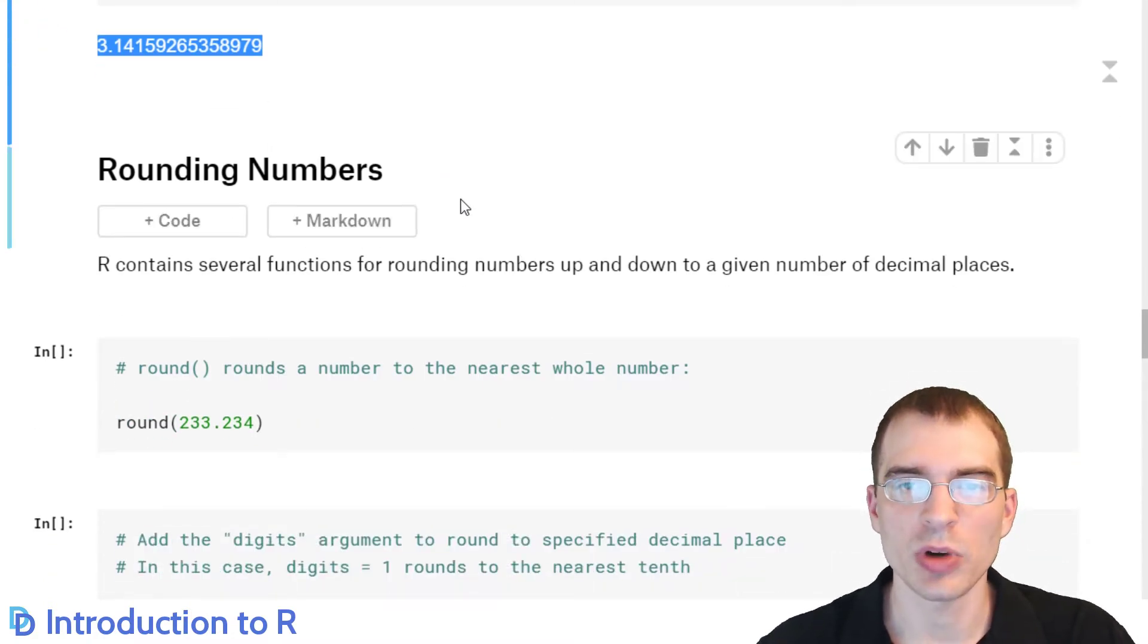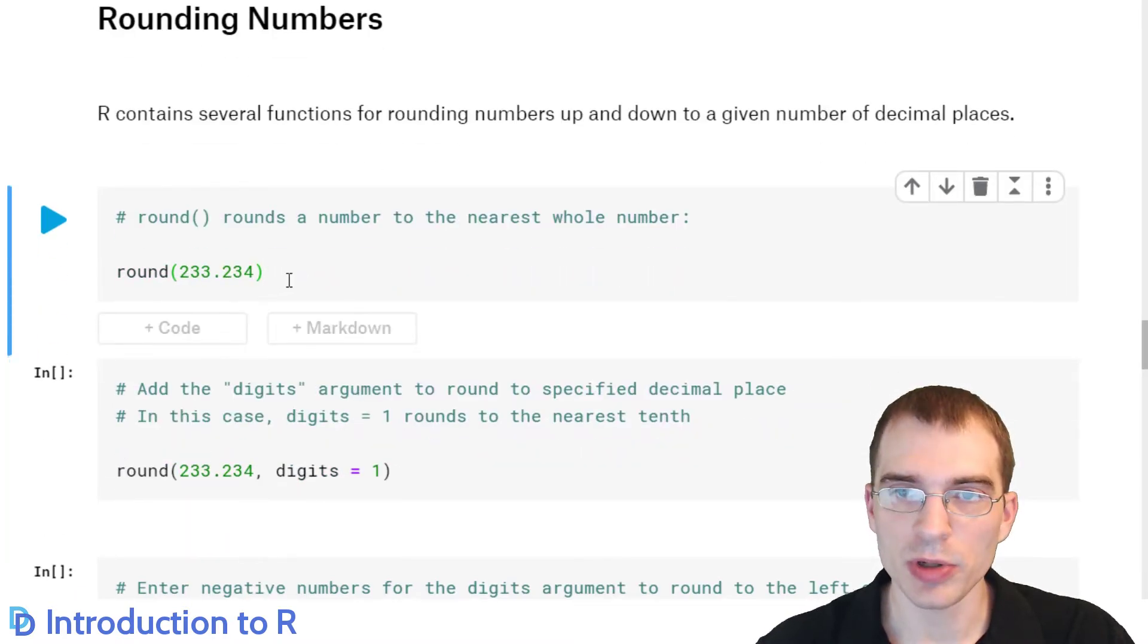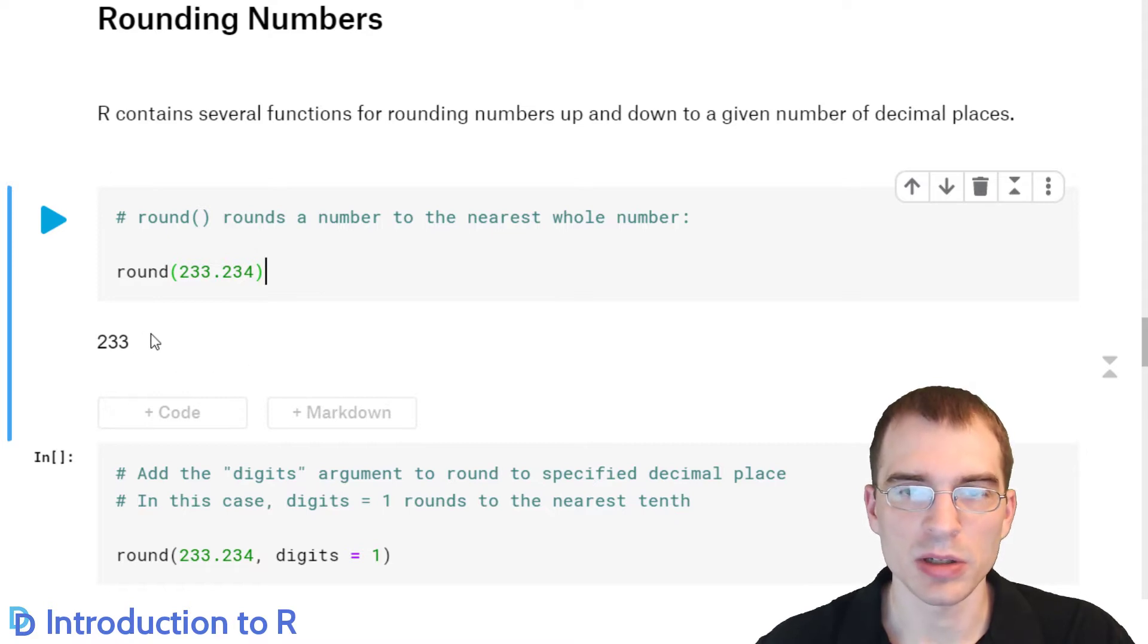There are several functions in R as well for rounding numbers, and this is actually something you'll probably be doing a fair amount in data science, especially if you're working with fairly large data sets. Sometimes a large data set that has a lot of precision in the floating point number, it might be unnecessary to have that amount of precision, and cutting it off to a certain decimal place can actually save a decent bit of memory in some applications. So to round numbers, you just use the round function. Here, we're rounding 233 with three decimal places, and you can see it rounded off to the nearest whole number.